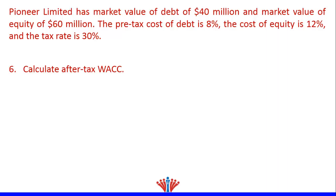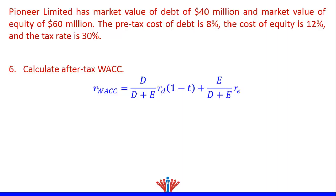In the sixth and last part of this question, we need to calculate after-tax WACC. After-tax WACC takes into consideration the interest tax shield; hence we need to use after-tax cost of debt, not pre-tax cost of debt. After-tax cost of debt is pre-tax cost of debt multiplied by 1 minus tax rate. Therefore, after-tax WACC is weight of debt multiplied by cost of debt multiplied by 1 minus tax rate, plus weight of equity multiplied by cost of equity.